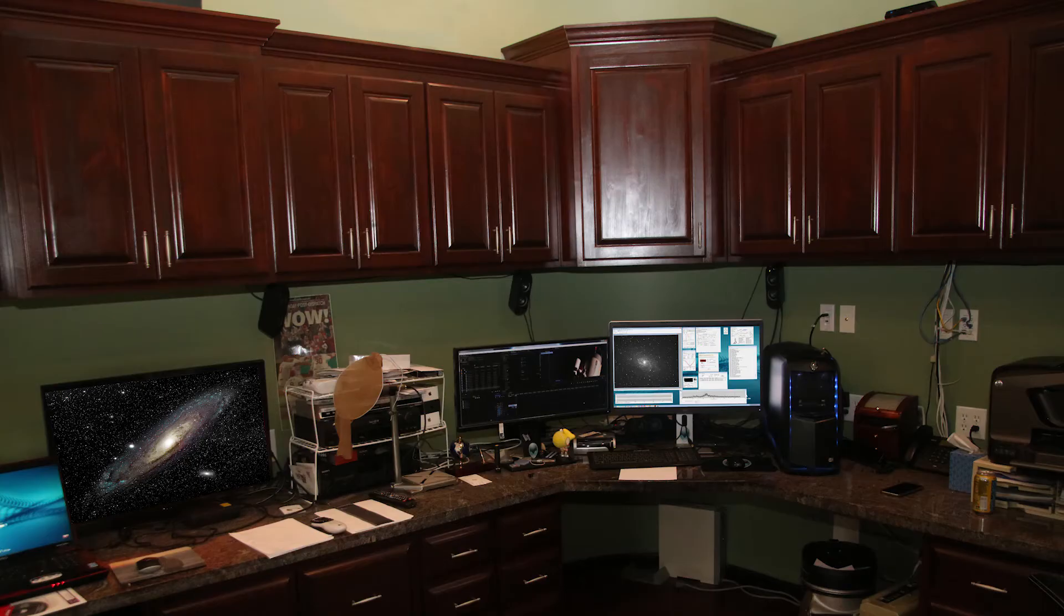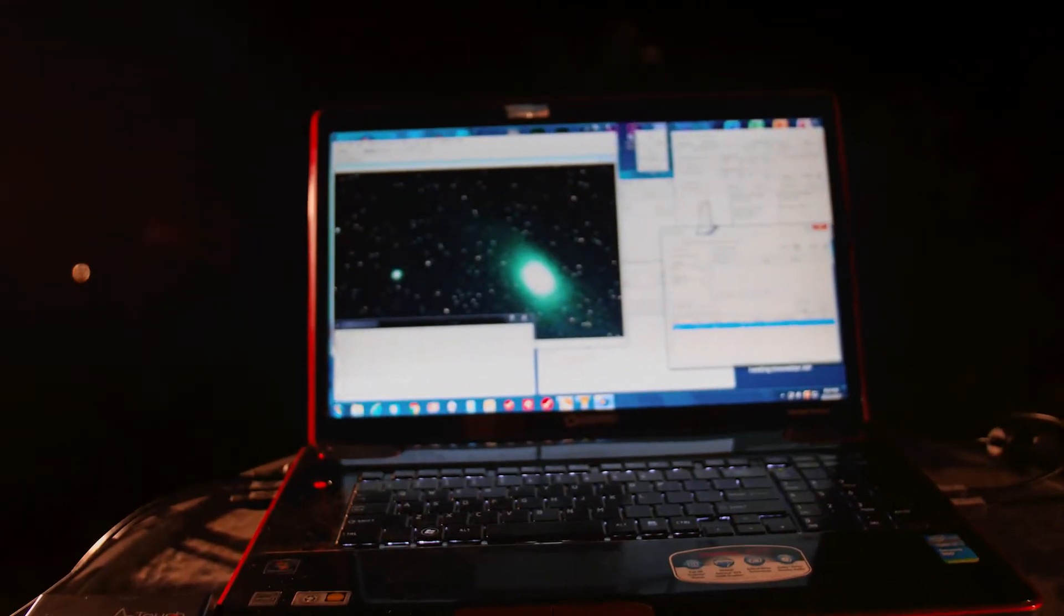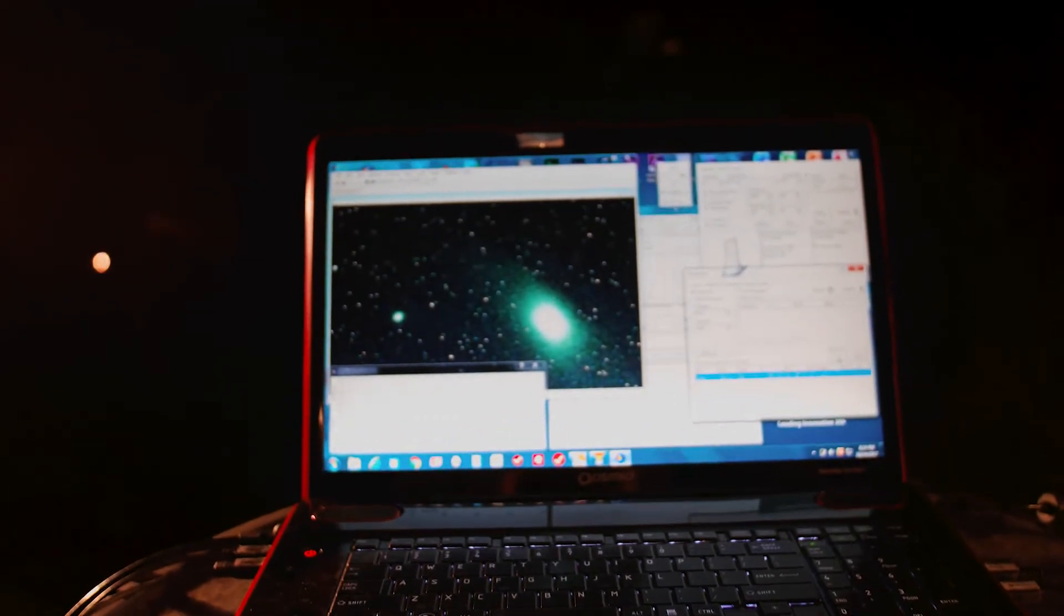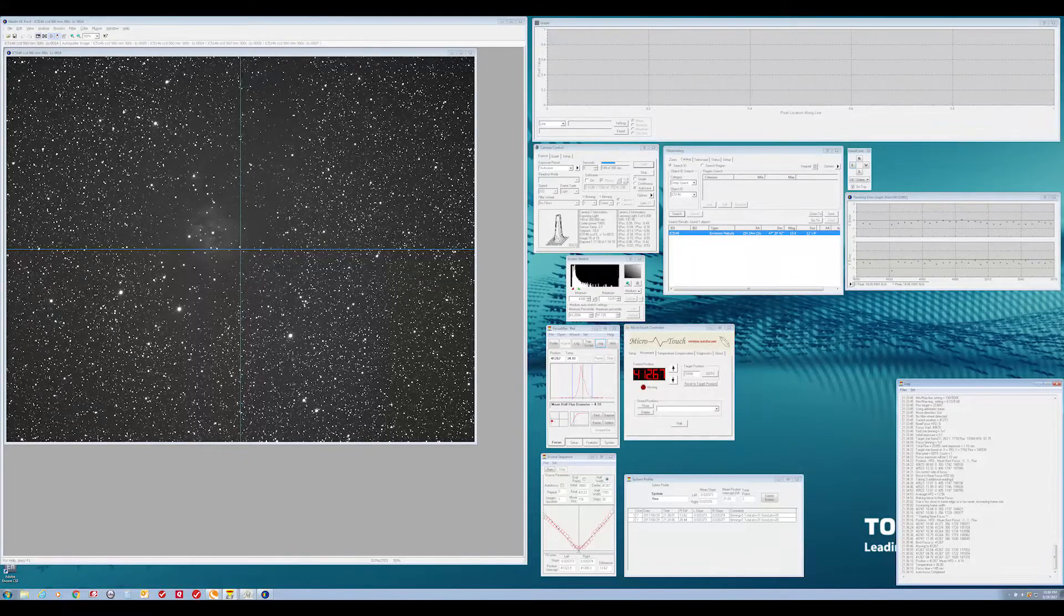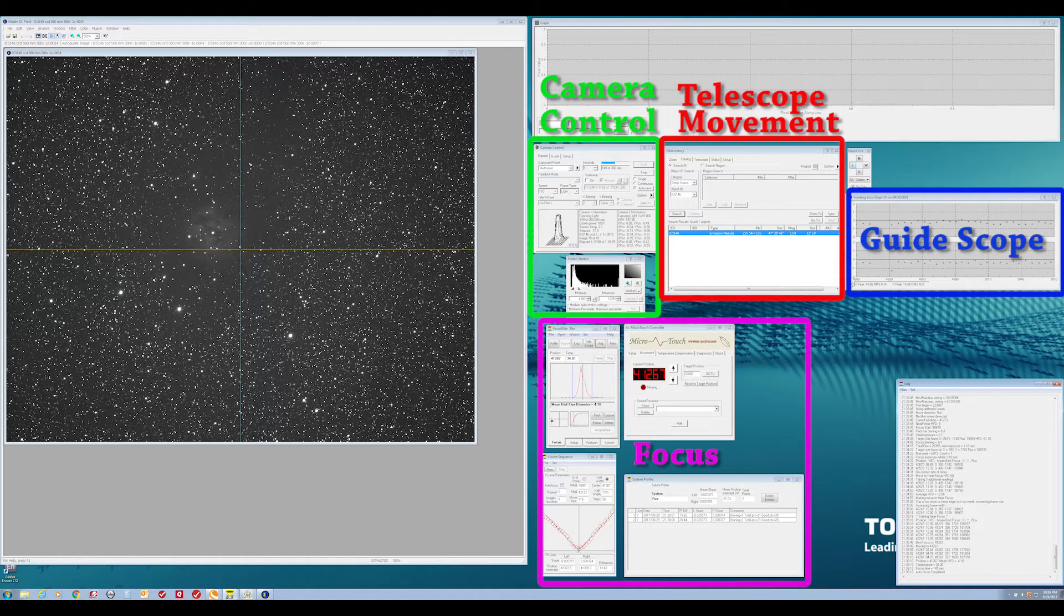At this point, the rest of the operations can be performed inside in the telescope control room as shown here. The laptop outside is remotely logged in from a computer inside. The Maxim DL software running on the laptop outside controls all aspects of the telescope.